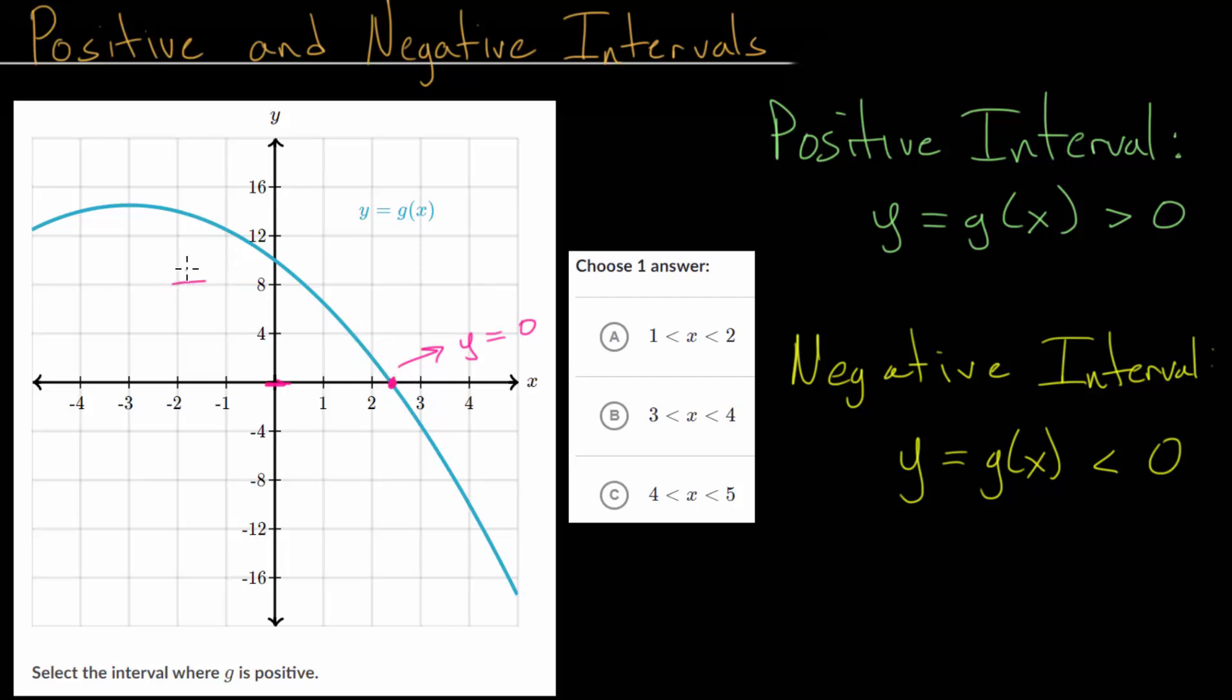Whereas any x value that has a y value less than this point will be part of our negative interval. So over here, this is our negative interval. Our positive interval starts at an x value around minus 5 here. At least that's all we know. So we can say it's positive when x is at least negative 5.